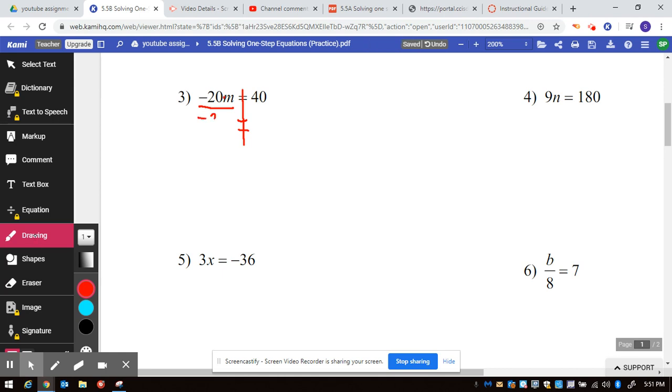is dividing, because negative 20 divided by negative 20 is 1m, and that's all we need to know what the value of one single m is. So 40 divided by negative 20 is actually negative 2.